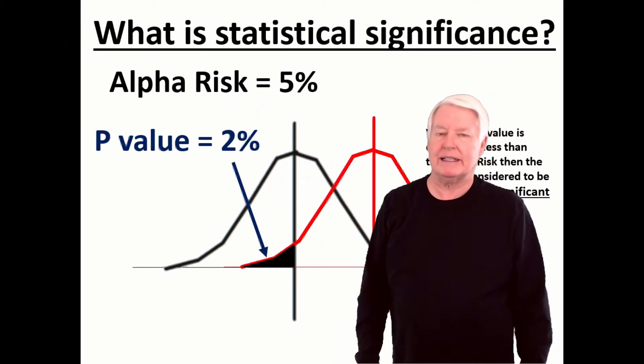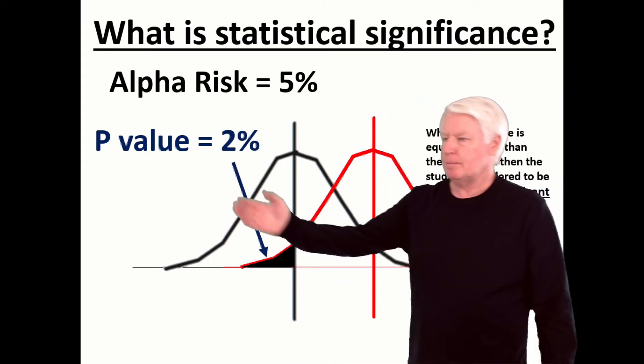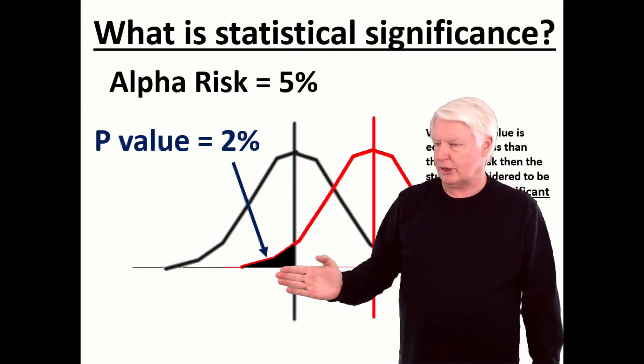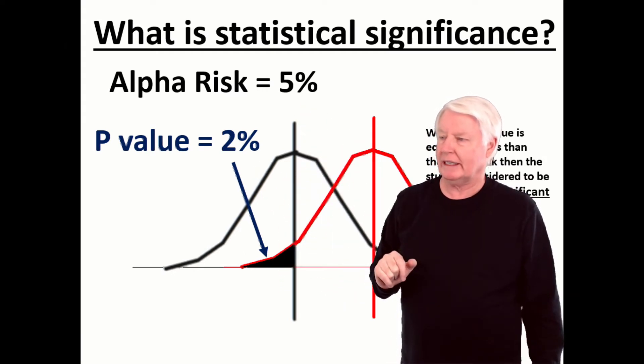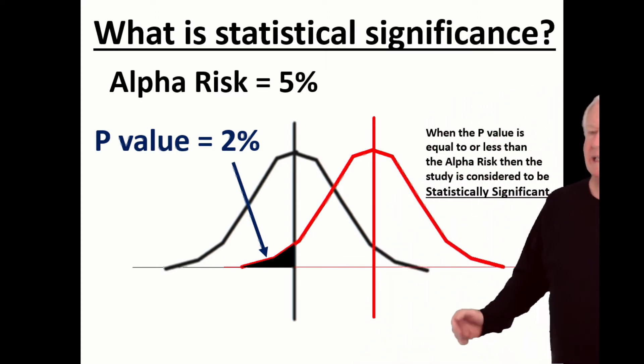The most common risk you're willing to take is 5%. Again, the risk you're willing to take is called alpha risk. The P-value is the actual risk you're taking. So if the actual risk you're taking is less than the risk you're willing to take, it's considered to be statistically significant.